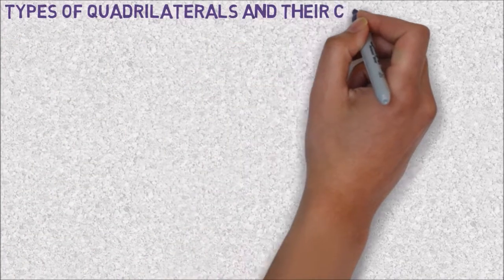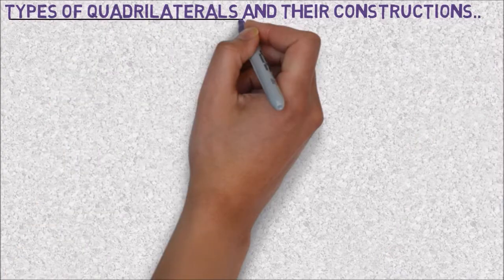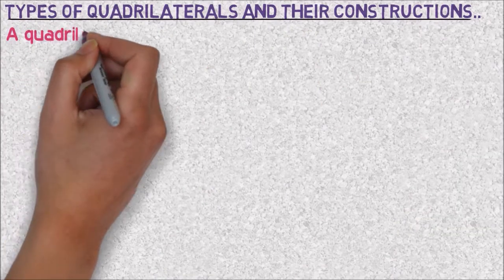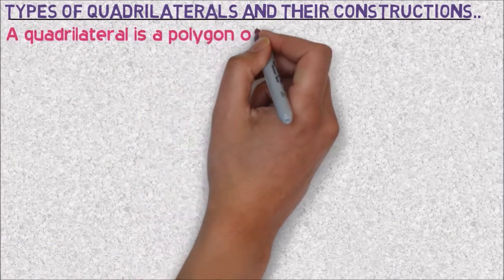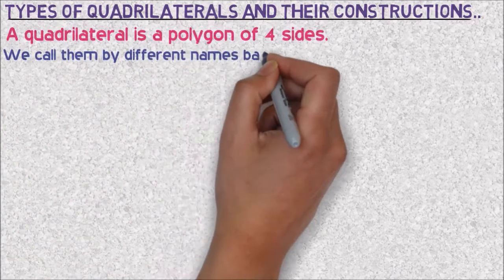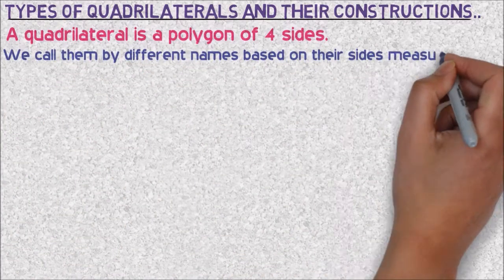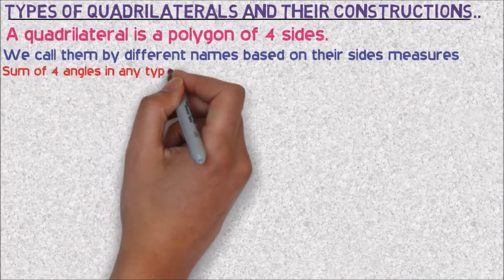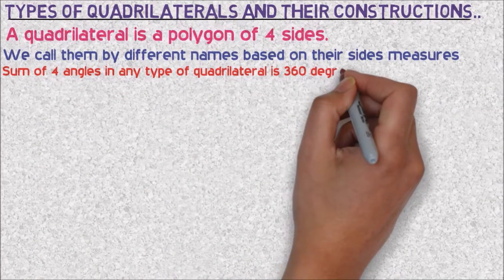Today let's see the types of quadrilaterals and their constructions. A quadrilateral is a polygon of four sides, and we call them by different names because of their side measures and other properties. The sum of four angles in any type of quadrilateral is always 360 degrees.